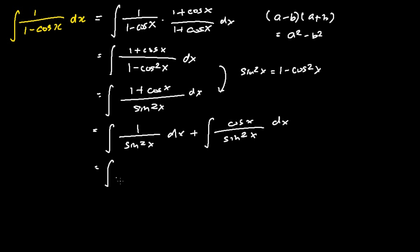We then transform 1 over sine square x as the following, which is cosecant square x dx. Whereas cosine x over sine square x, we can transform it to become cotangent x cosecant x dx.